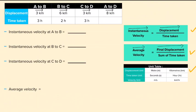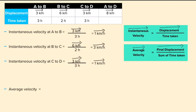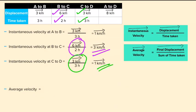First, calculate the instantaneous velocity from A to B. From the table: displacement is 3 kilometers and time taken is 3 hours. So instantaneous velocity is 3 km divided by 3 hours, which equals 1 kilometer per hour. We also put an arrow on top because this is velocity, not speed. For B to C: displacement is 6 km and time taken is 2 hours, so 6 divided by 2 equals 3 kilometers per hour. For C to D: displacement is 3 km and time taken is 3 hours, so 3 divided by 3 equals 1 kilometer per hour.